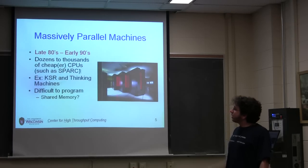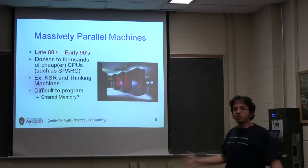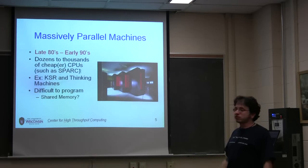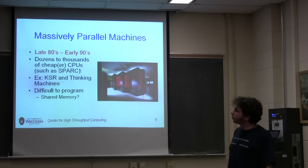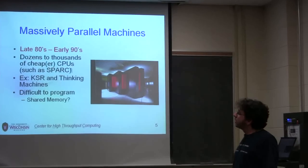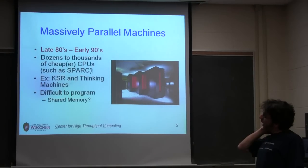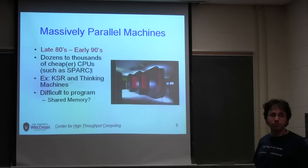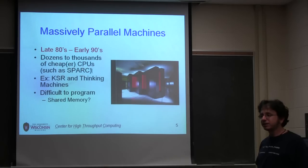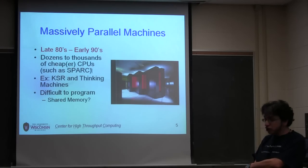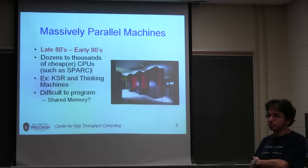The idea of these machines was instead of one big fast vector processor, there were dozens to thousands of really cheap CPUs, because this is where CPUs were first becoming commoditized — the SPARC CPU was a common one used in Sun SPARCstations. Examples were Thinking Machines and Kendall Square Research. Especially the ones that used distributed memory were very hard to program — this is where message passing libraries like PVM and MPI became popular. The Kendall Square Research machine used shared memory, which was a little easier to use. A lot of research now is going back to how you use shared memory machines efficiently.